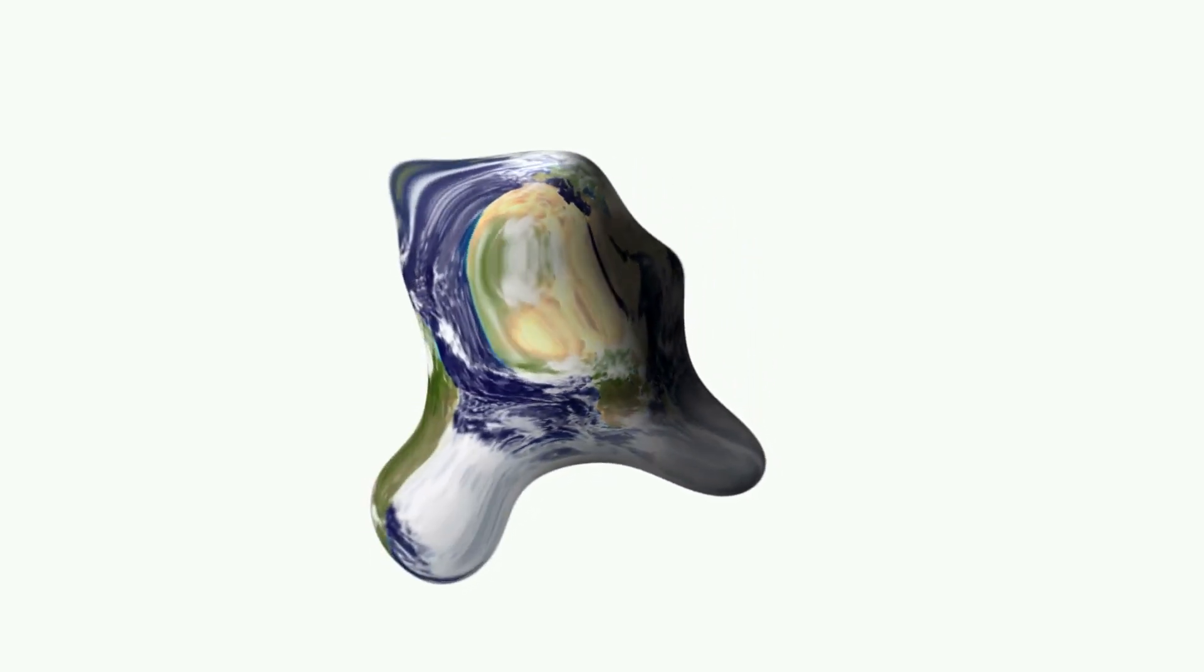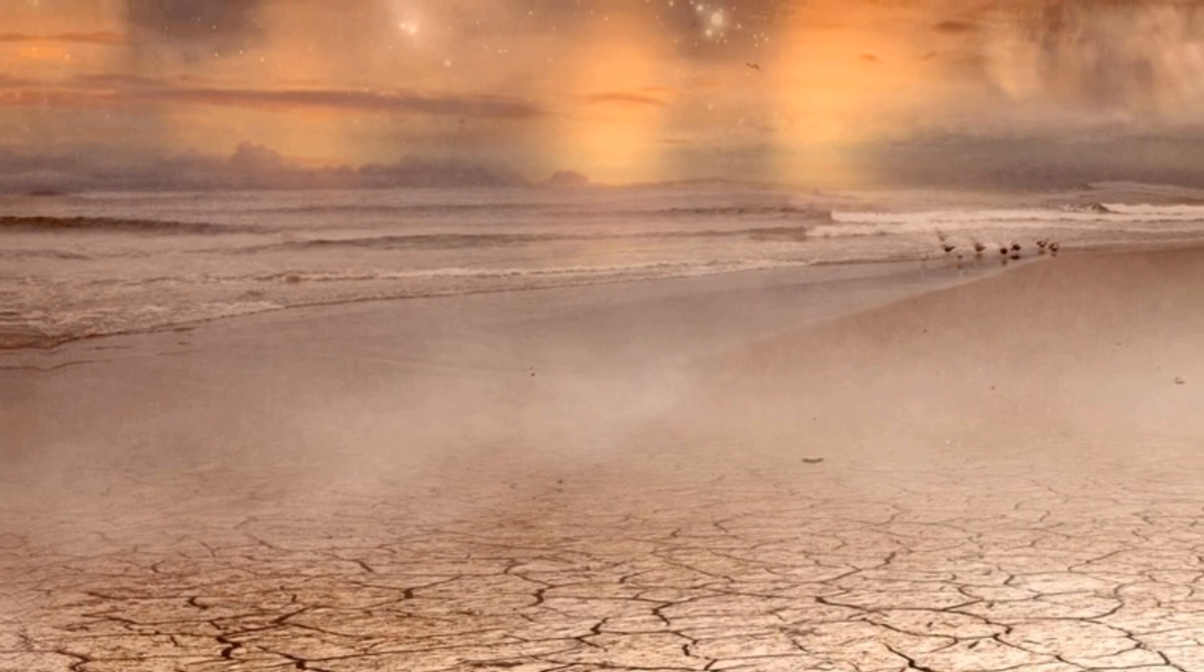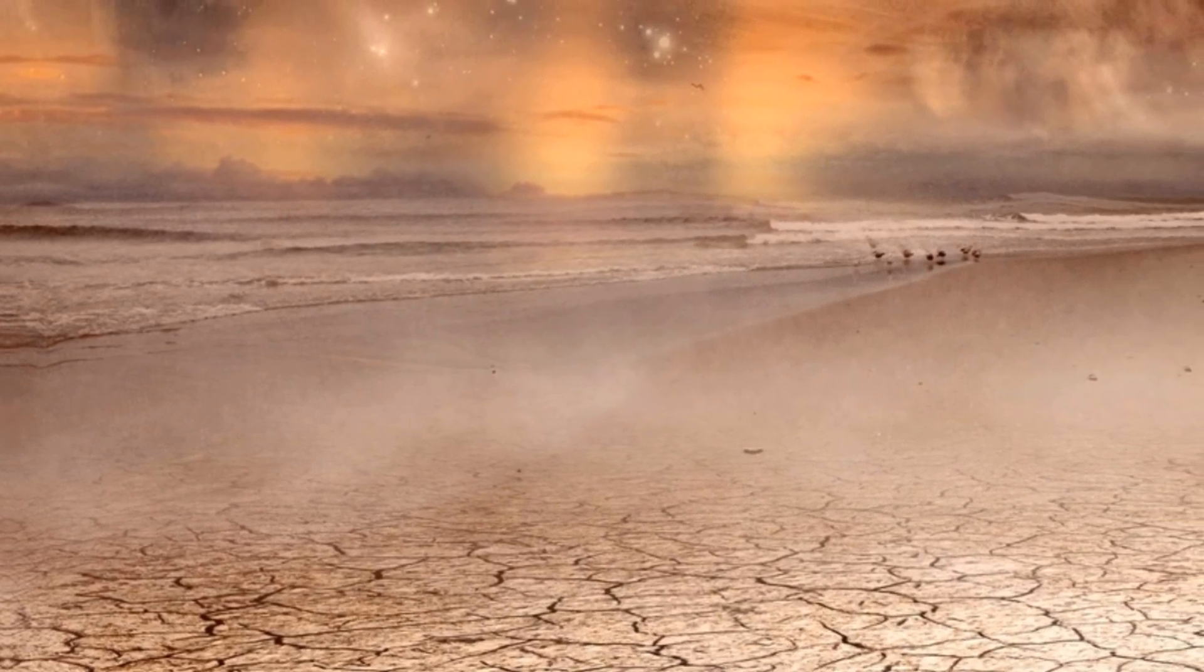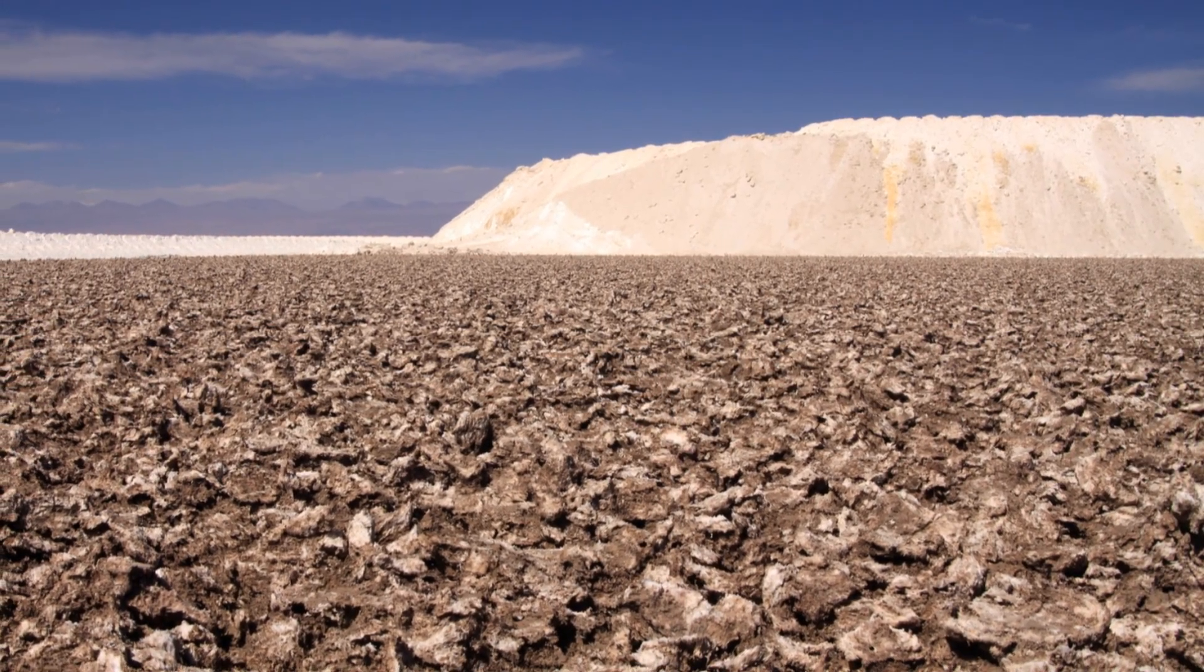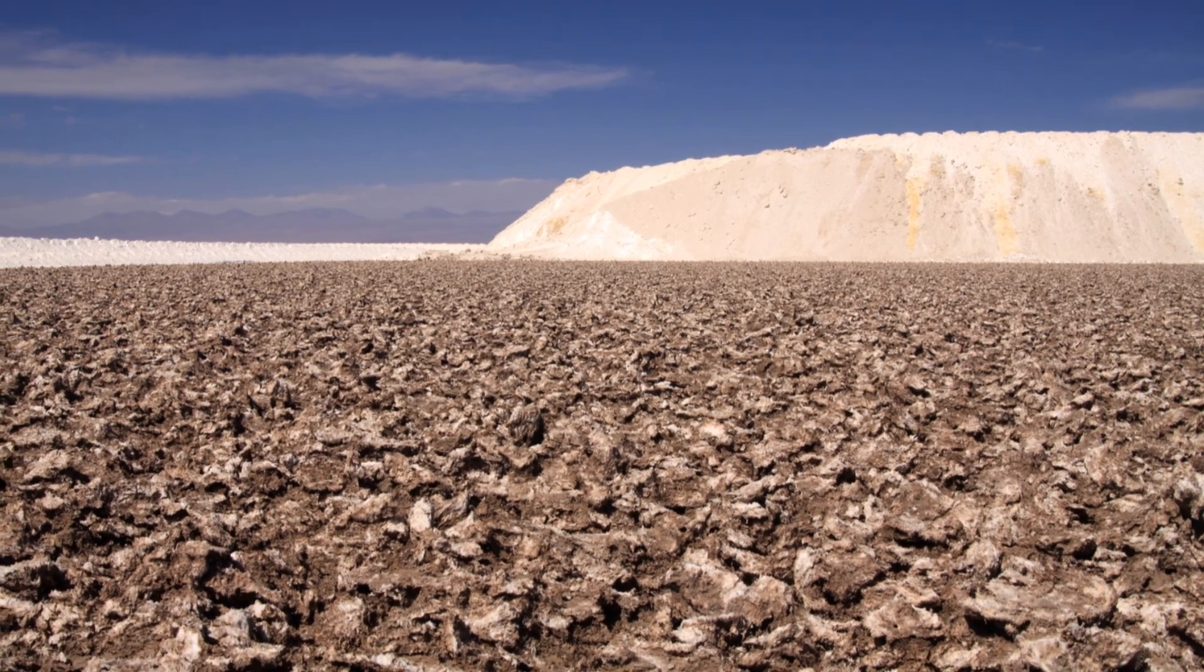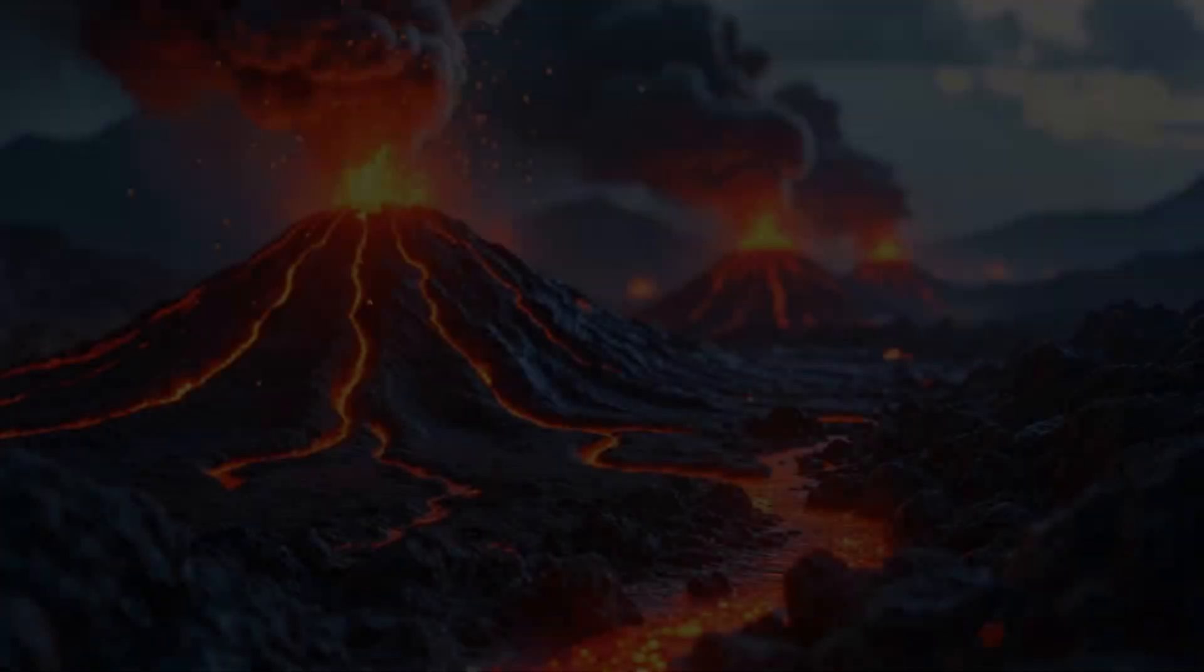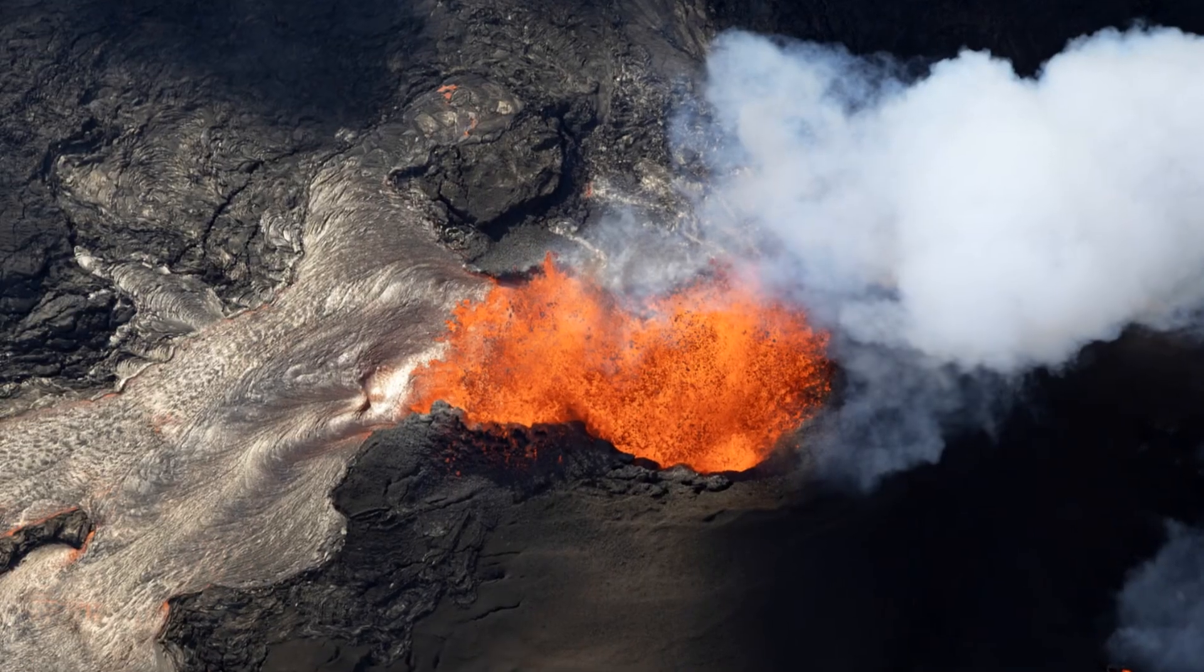The Permian-Triassic extinction event, occurring roughly 252 million years ago, stands as the most severe extinction event in Earth's history. This event, dubbed the Great Dying, wiped out an estimated 96% of marine species and 70% of terrestrial vertebrate species. The exact cause remains a subject of debate, but evidence points towards massive volcanic eruptions as the primary culprit.